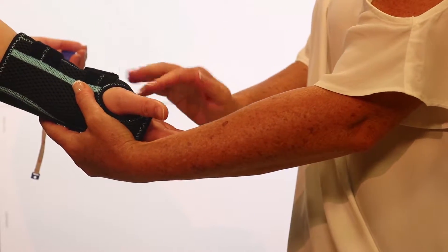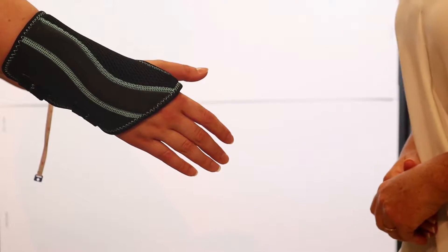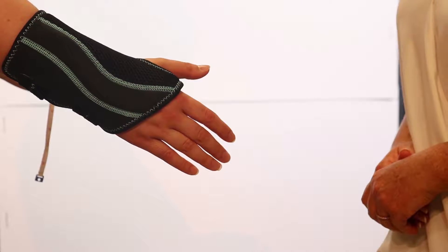Check the rigid stays to ensure they are centered in the palm and the top of the wrist. The brace should fit snug but comfortable, ensuring not to restrict circulation.